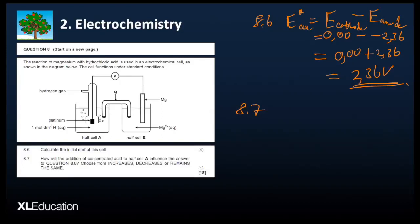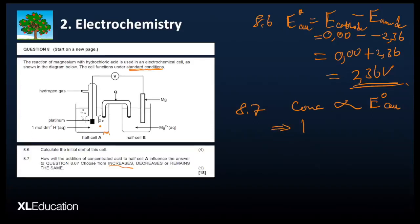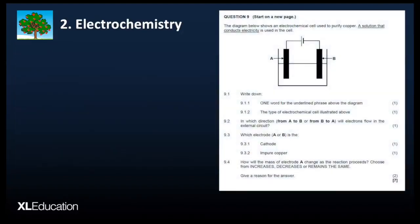'How will the addition of concentrated acid to half-cell A influence the answer to 8.6?' We are increasing the concentration of the acid. Under standard conditions, concentration should be 1 mol·dm⁻³. If we increase the concentration, you should know that the E(cell) value will also increase — concentration is directly proportional to E(cell). So the answer increases. What a simple question — those are low-hanging fruits.